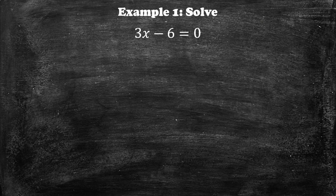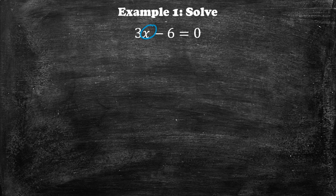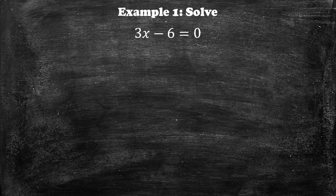Example number one, we want to solve 3x minus 6. Whenever we are solving linear equations, we want to isolate the x — we want to get that by itself and move everything else to the other side of the equal sign. So what we see is that it's 3x minus 6, so we want to move that 6 over by adding 6 to both sides.